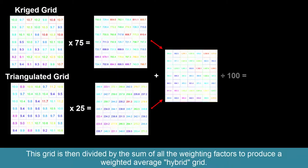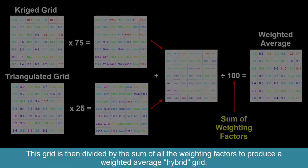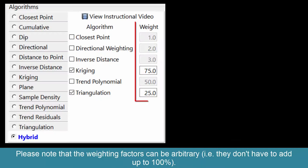This grid is then divided by the sum of all the weighting factors to produce a weighted average hybrid grid. Please note that the weighting factors can be arbitrary.